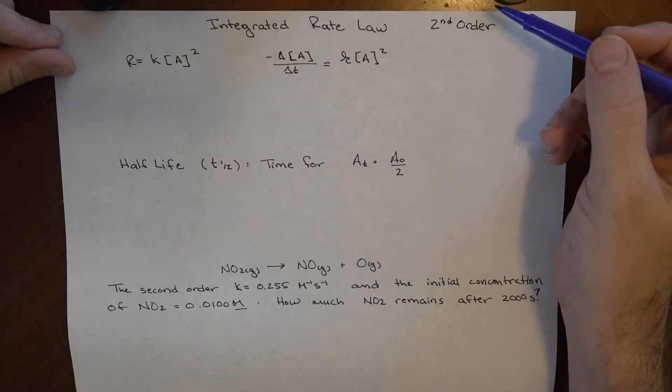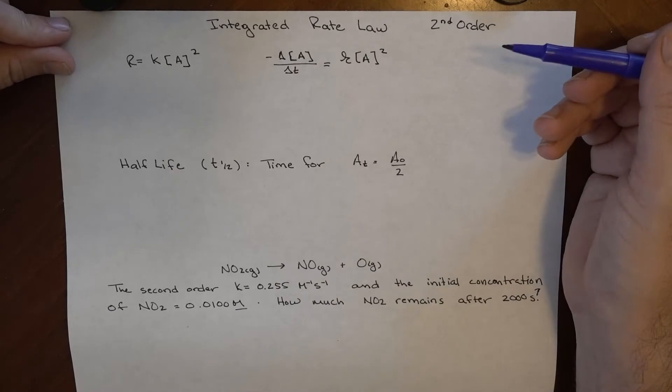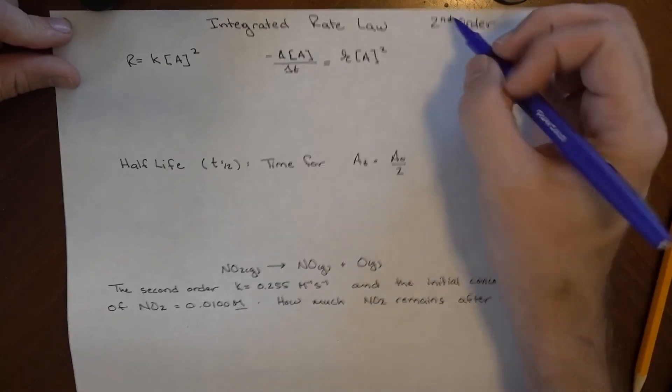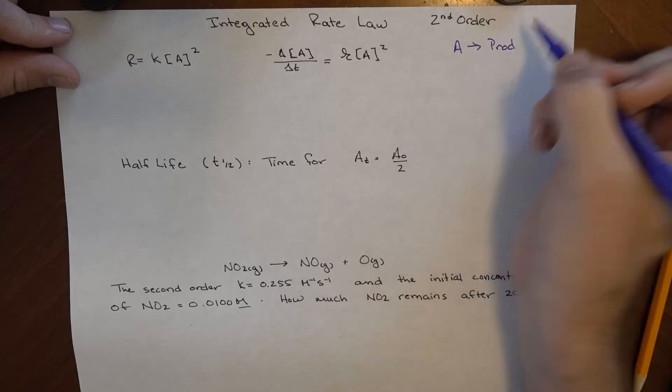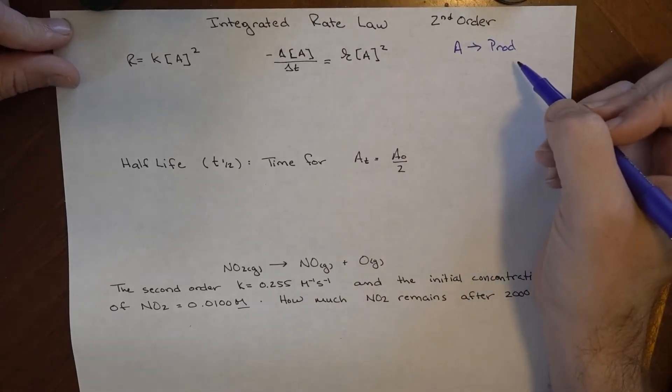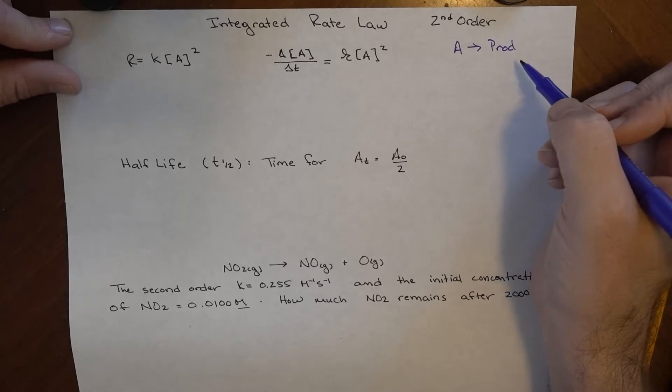So we're going to go over second-order rate laws, the integrated rate law for a second-order reaction. This is going to be some sort of A goes to products type reaction, and remember that the actual reaction does not tell us what the order is in terms of kinetics.